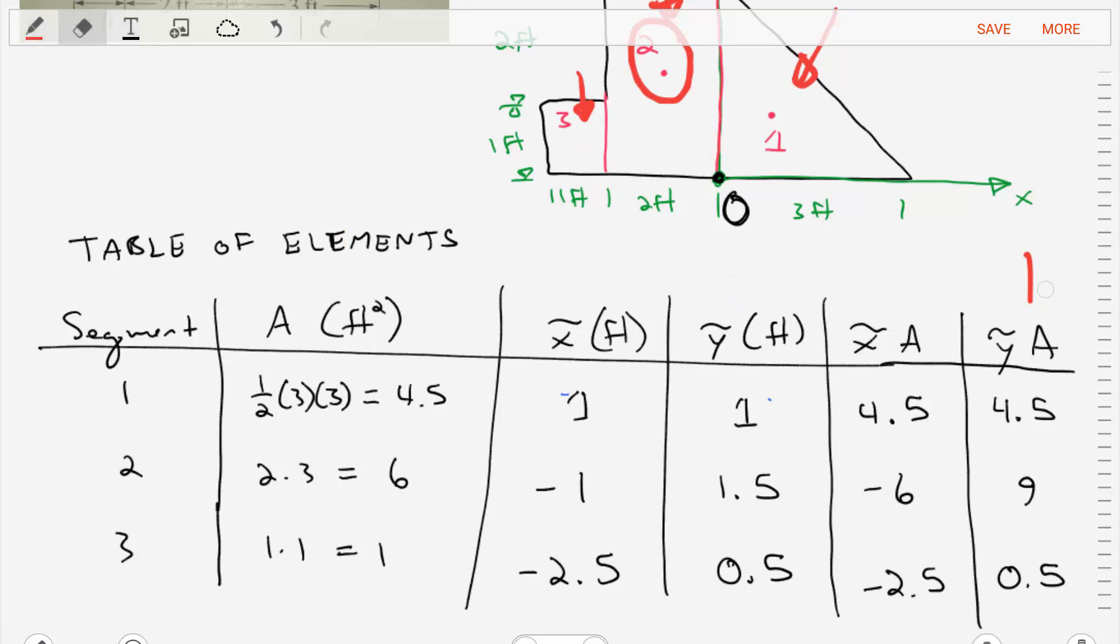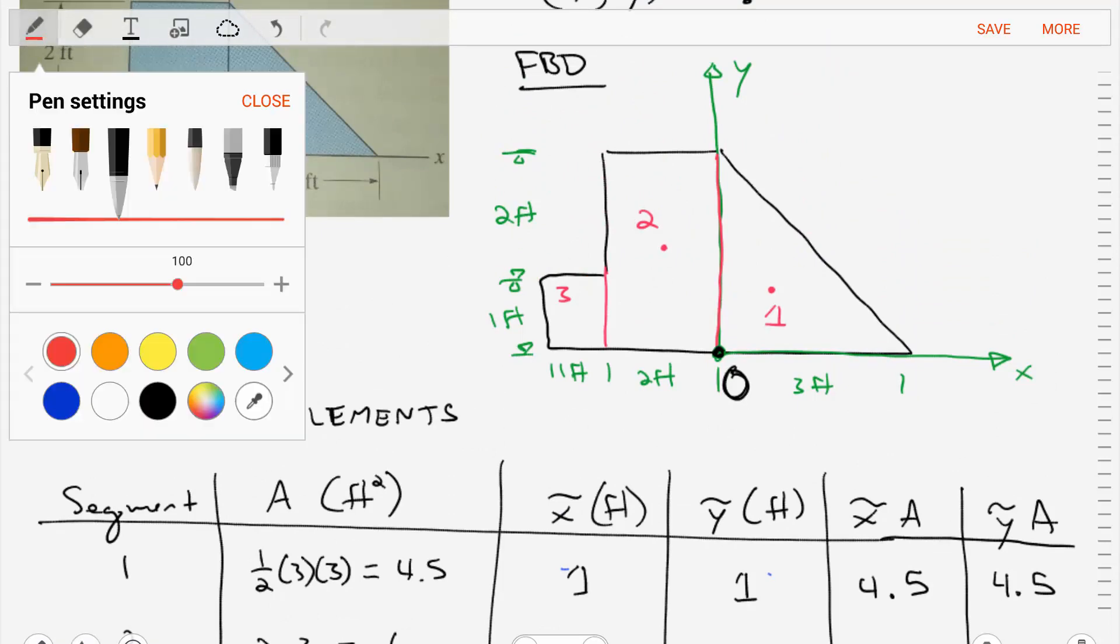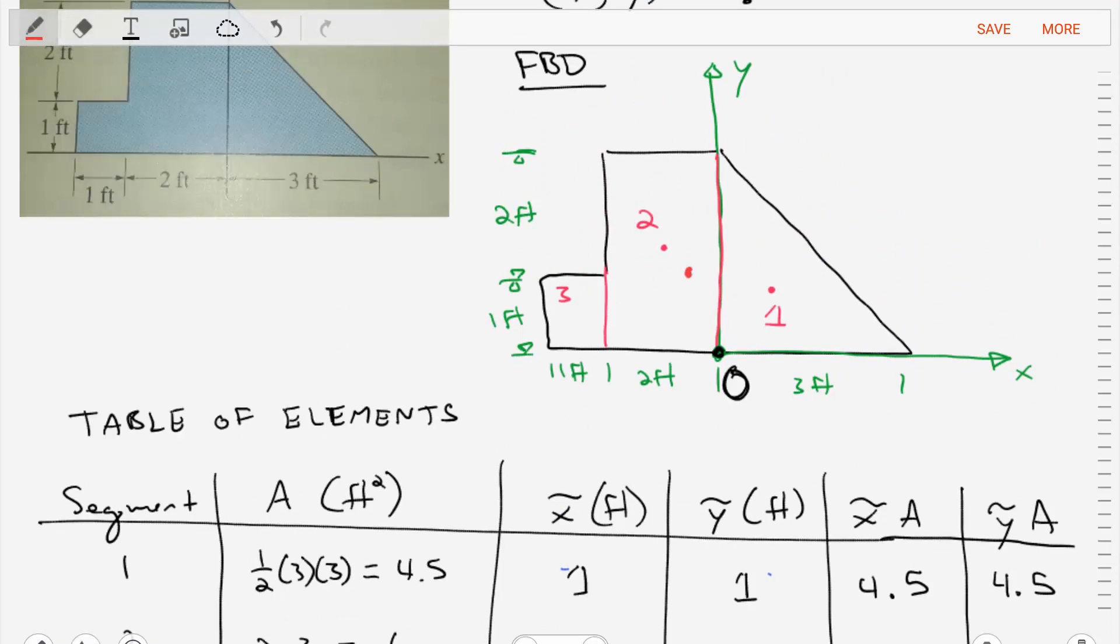So now that we have our table of elements filled, we now need to take this information and combine it to find the true centroid of the entire area, the relative combined centroid.